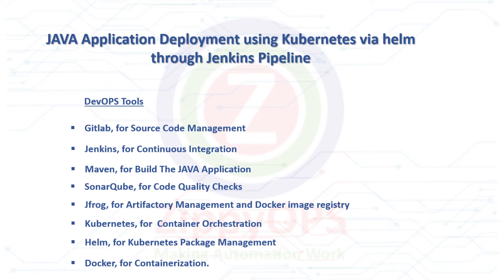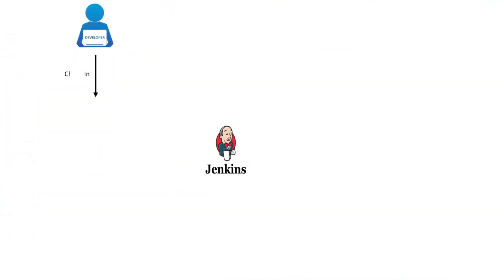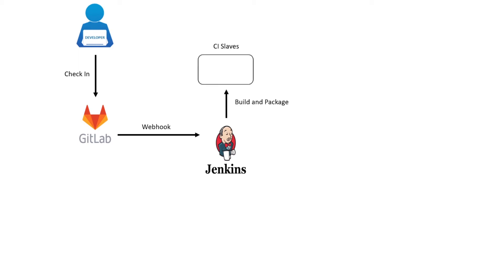Let's explore the workflow of Java application deployment on Kubernetes using Helm, stage by stage. Jenkins' job will pull the Java application source code from GitLab. A webhook is configured on GitLab so that the ongoing deployment job will trigger automatically when a commit happens on a particular branch. In the next stage, the Java application source code will be built using the Maven plugin, either in Jenkins master or slaves. In case of any failures in the build step, the pipeline will be aborted. The deployment package will be archived on Jenkins for future use.